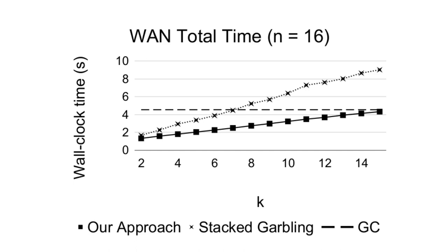Specifically, our wall clock time approaches that of standard garbling as k approaches n. This can be explained by our choice of stacking matrix A: as k approaches n, A features increasing numbers of zeros, which reduces the cost to both stack and unstack material. In the special case n equals k, A features zeros everywhere except on one diagonal where it has ones — a mirror of the identity matrix. Hence, in this special case, our scheme and standard garbled circuit perform essentially identical actions.